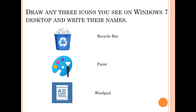Draw any 3 icons you see on the Windows 7 desktop and write their names. You can draw any 3 icons from the Windows 7 desktop. Here I am giving these 3 icons: Recycle Bin, Paint, and WordPad.